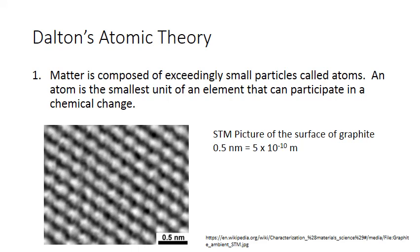And this picture gives you an idea of the scale of the atoms. The black line in the corner represents 0.5 nanometers. And 0.5 nanometers is the equivalent of 5 times 10 to the negative 10 meters. So this is extremely tiny.